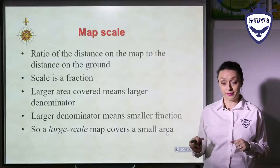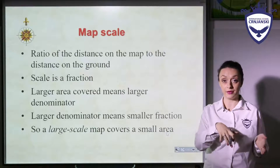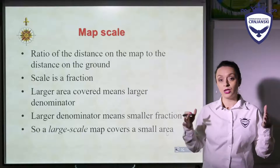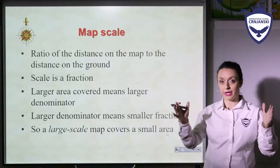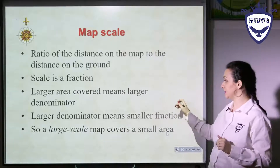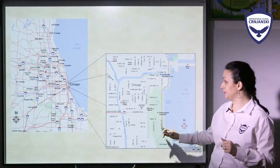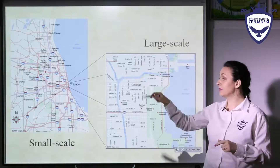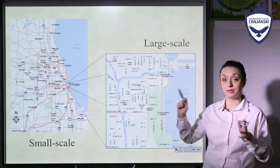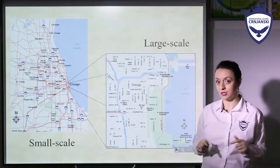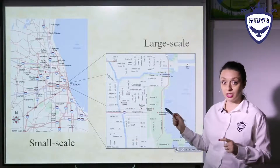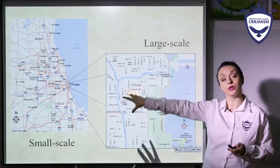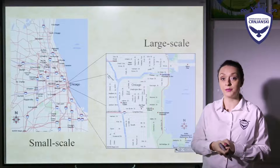So a large-scale map actually covers a small area. If you have a large-scale map, you are presenting a smaller area but enlarged. Here you have two examples: this is a large-scale map and this is a small-scale map. They represent the same place — something about Chicago city — but in the large-scale map you can see enlarged areas with details, while the small-scale map shows a more general view of Chicago and surrounding places.